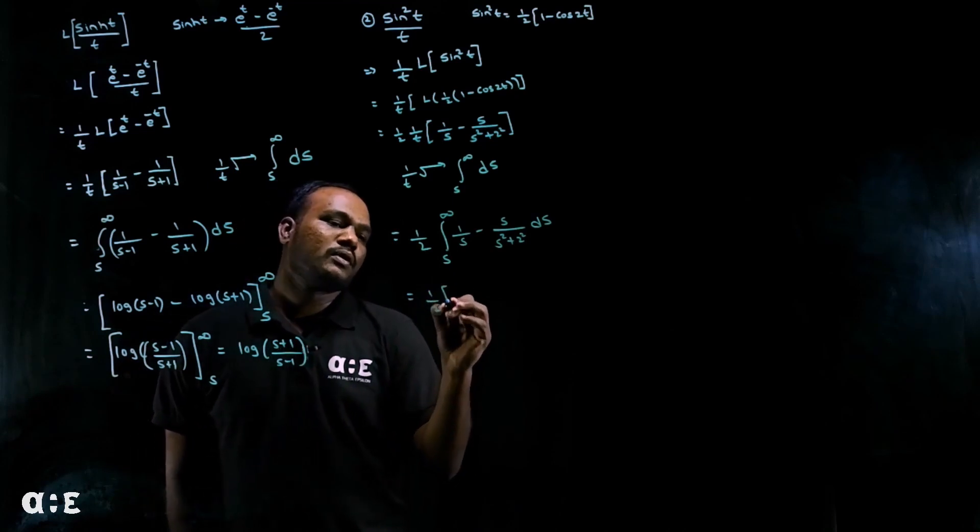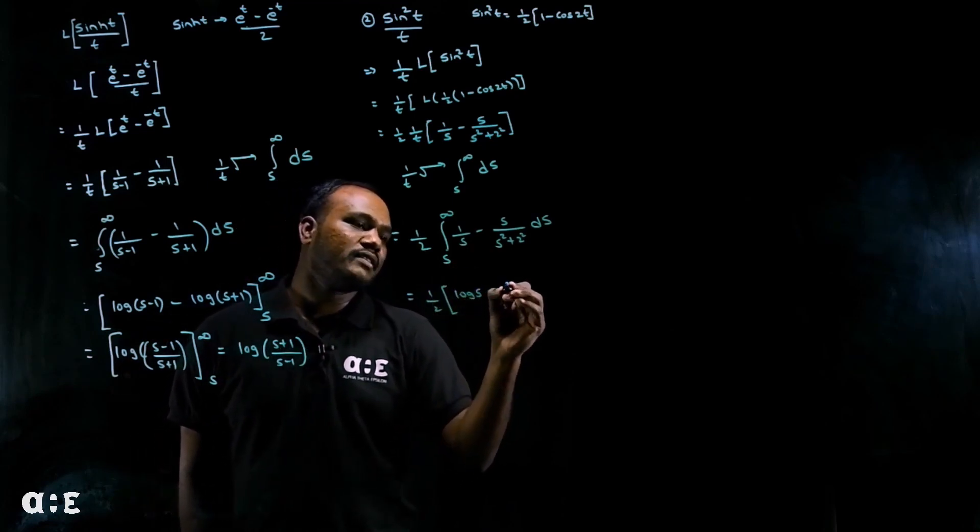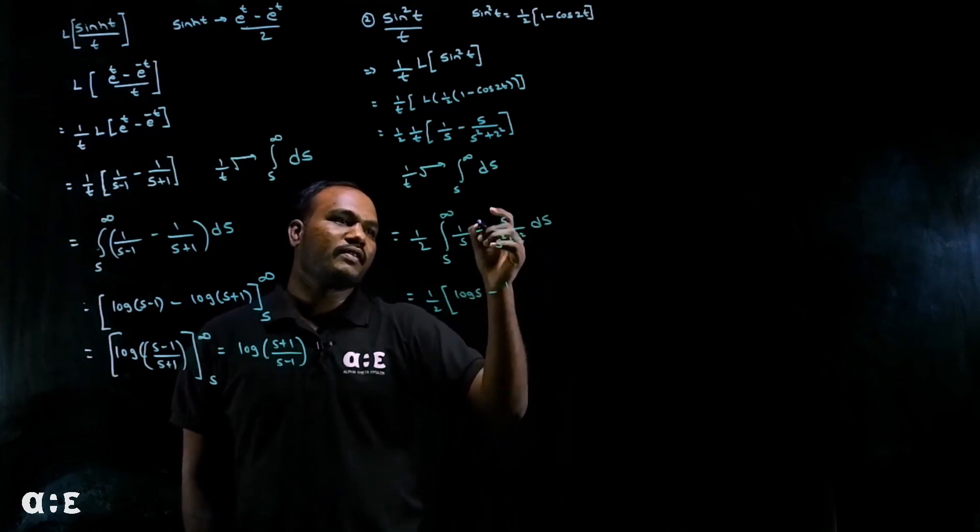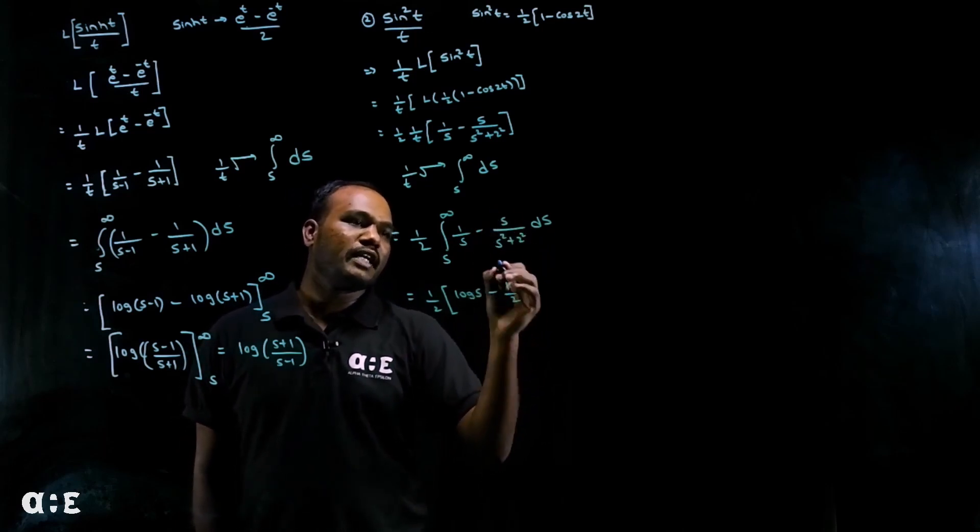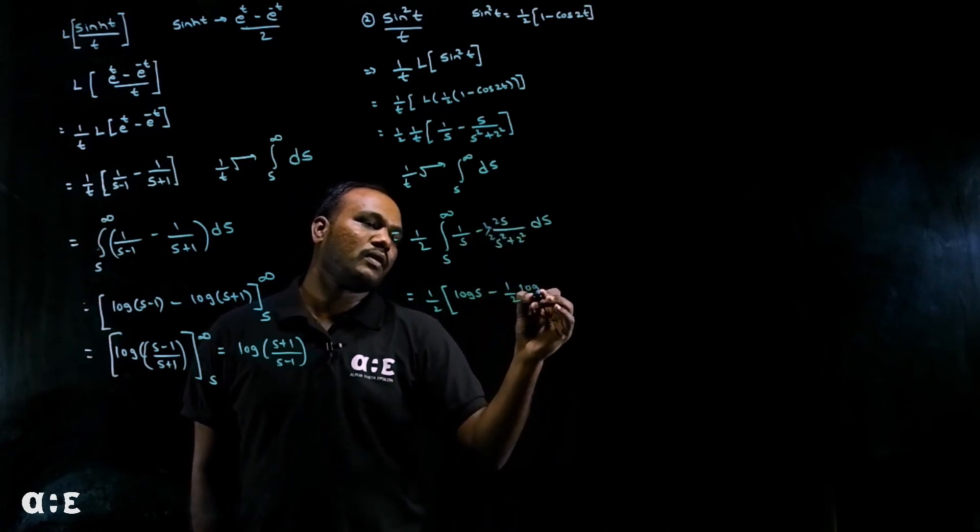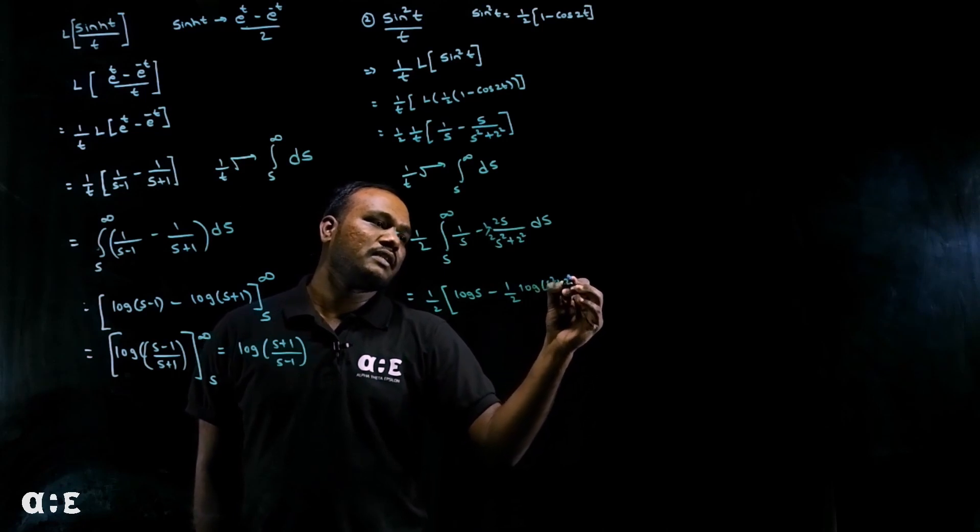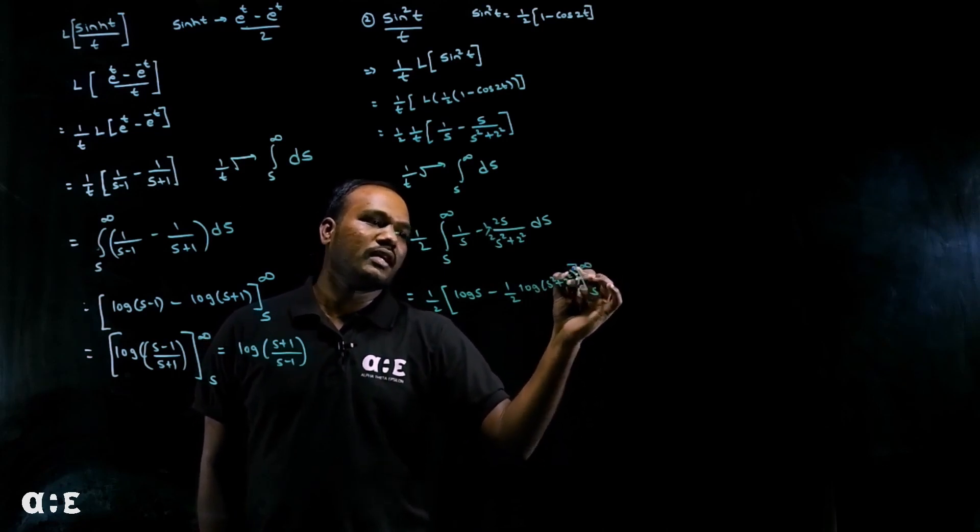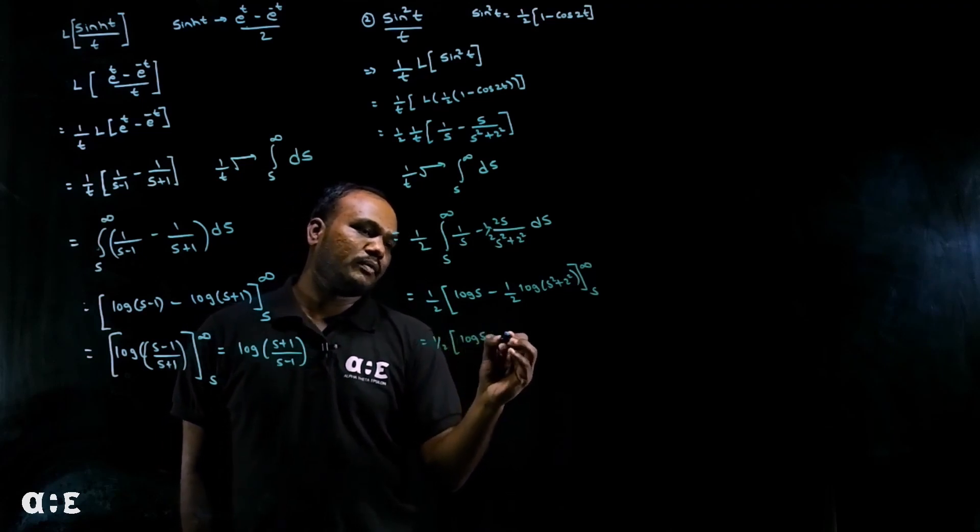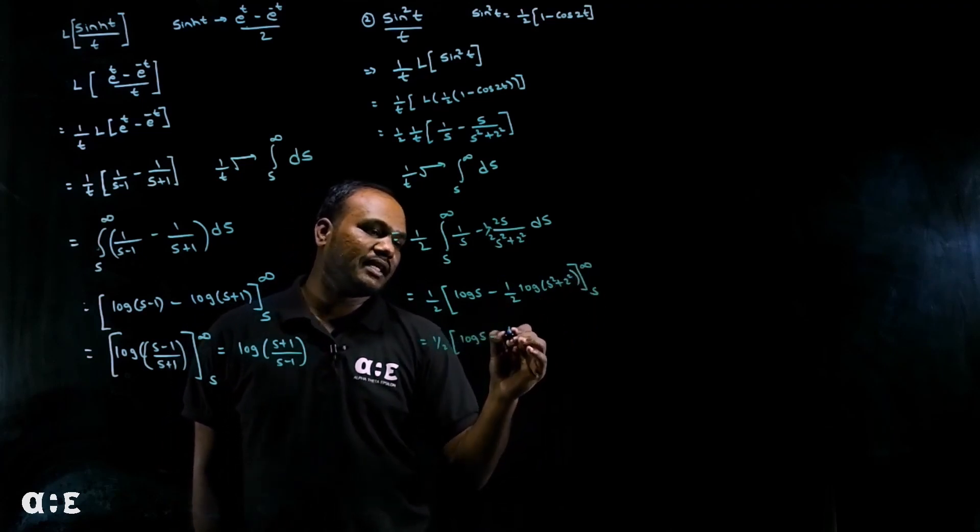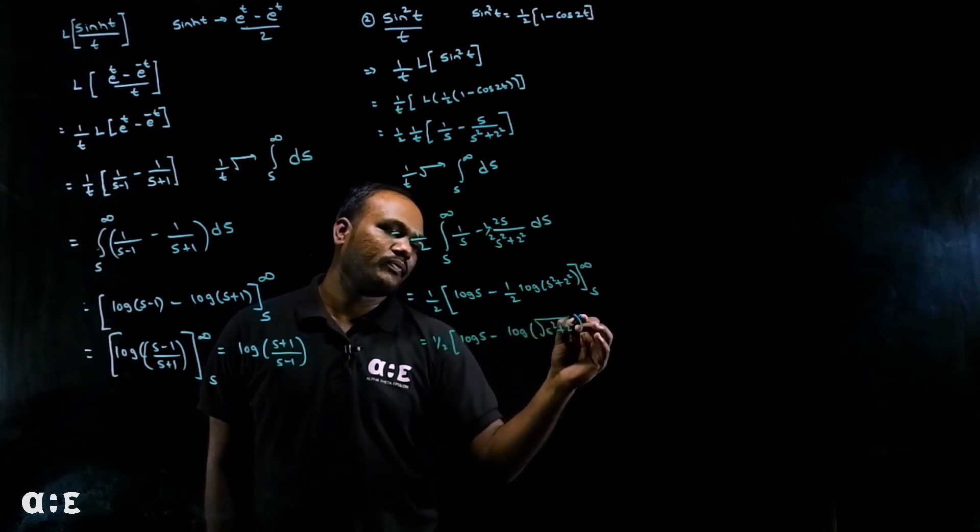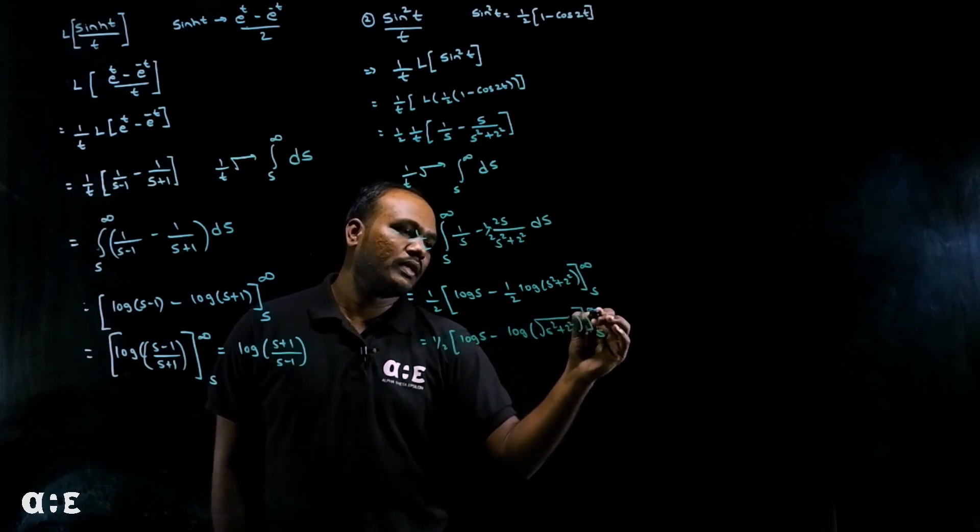So one by two - this will become log s minus. We don't have 2s here; differentiation of s square is 2s. I'll divide by two and multiply with two here. So this whole term will become log of s square plus 2 square from s to infinity. Also next step, log s minus I'll take this root to that side, so it will become log root of s square plus 2 square, s to infinity.